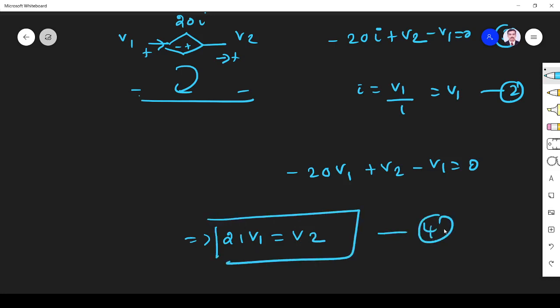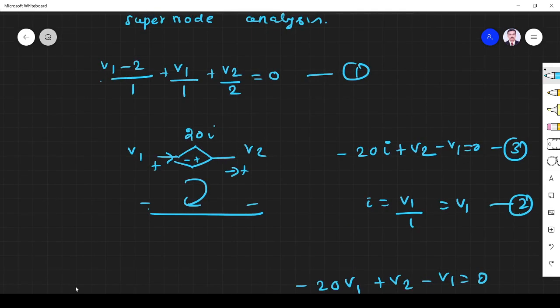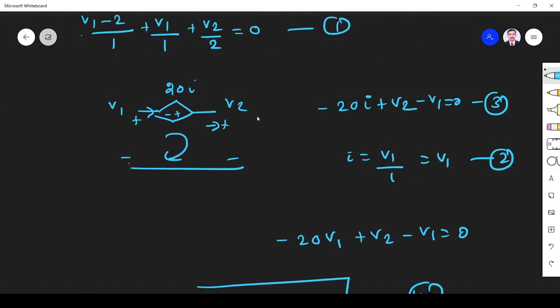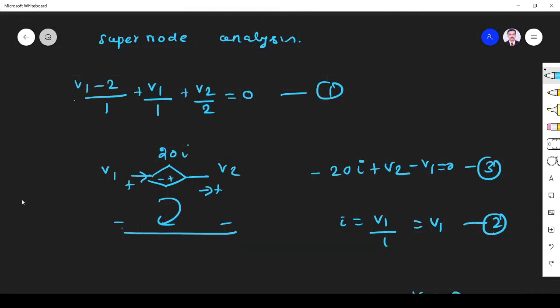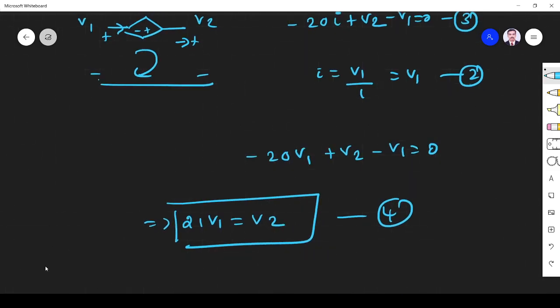What is equation number 1? Let me simplify this. Two is LCM. If you simplify: 2V1 - 4 + 2V1 + V2 = 0. It will give 4V1 + V2 = 4. This is equation number 5.